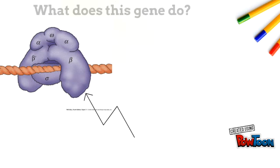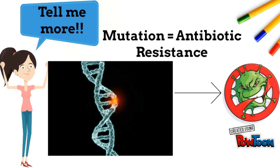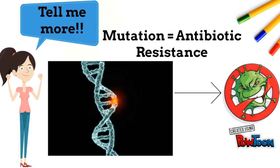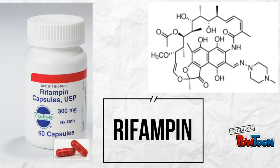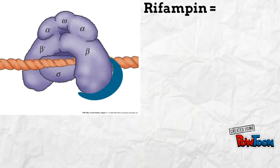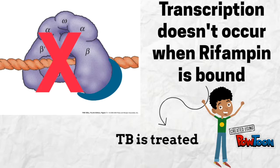The RPOB gene encodes the beta subunit of RNA polymerase, so RNA polymerase can transcribe the genome. In Mycobacterium tuberculosis, antibiotic resistance is created when there is a point mutation in the RPOB gene. To treat tuberculosis, a drug called rifampin is used, which causes inhibition of transcription by binding to the beta subunit of RNA polymerase. Rifampin binds to the beta subunit, causing transcription of the genome to halt, and thus tuberculosis is treated.